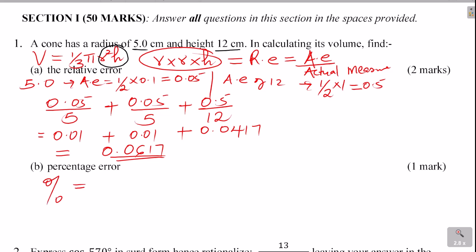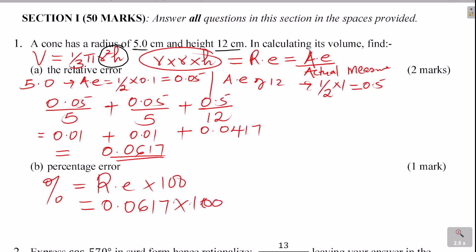Now for percentage error. Percentage error is given by relative error multiplied by 100. In this case, we have the relative error as 0.0617, and we multiply this by 100. This gives us 6.17%. That is simply how we get the percentage error.